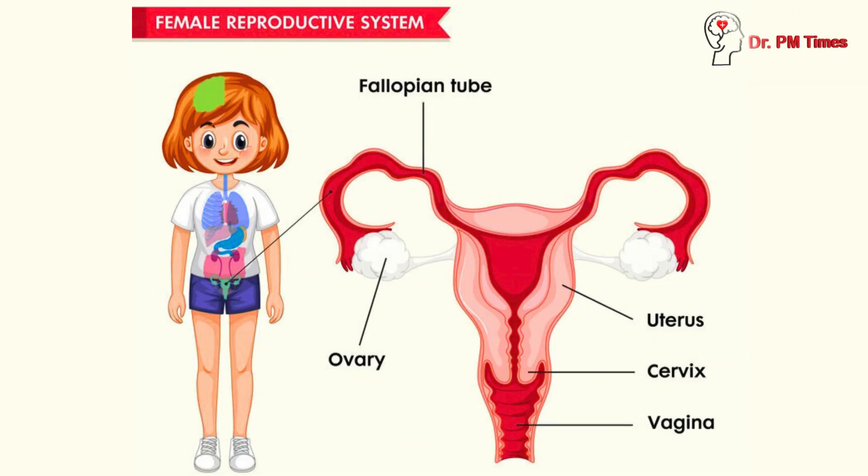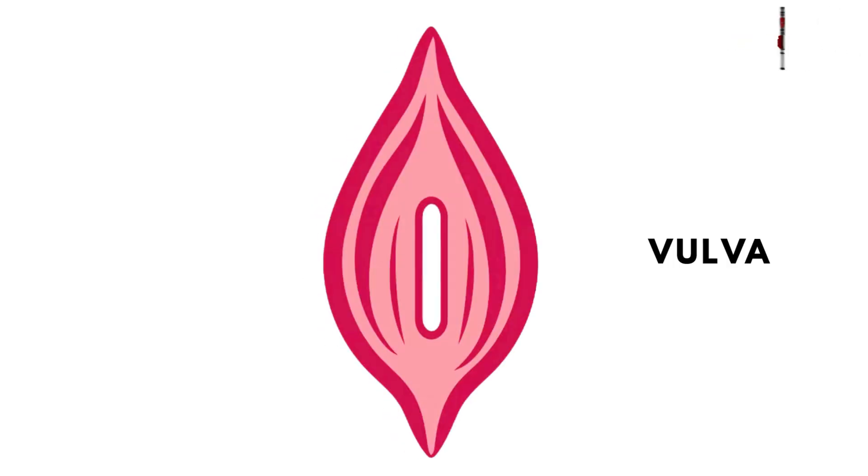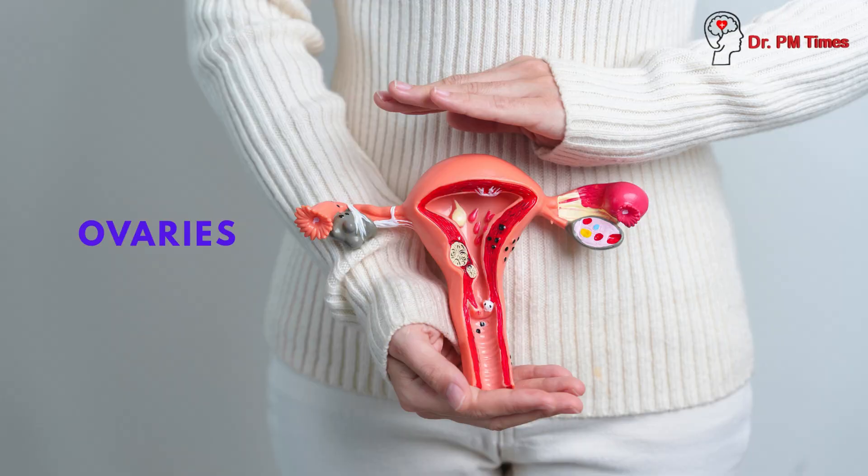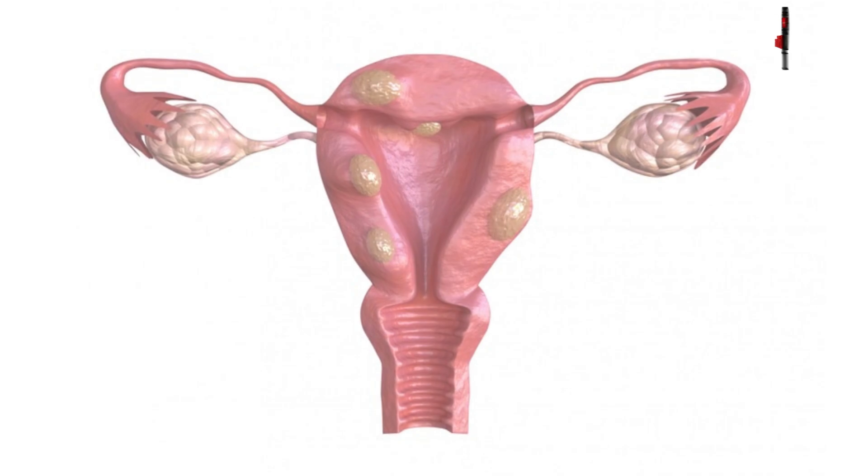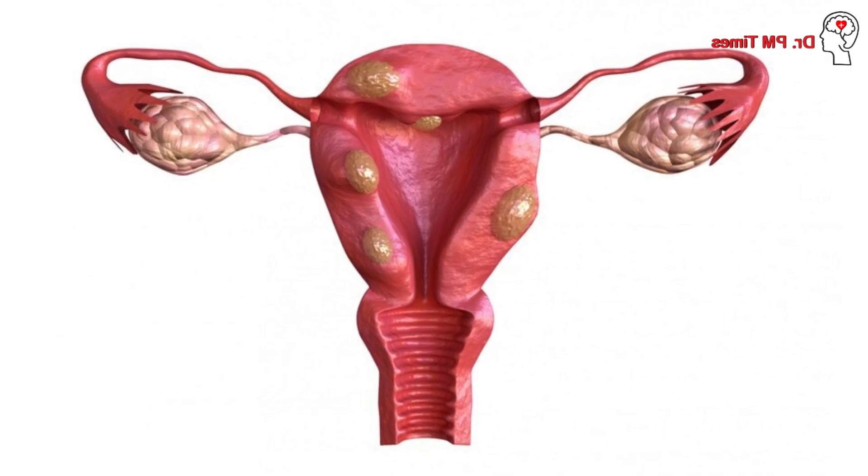The fourth stage of puberty is the development of genital organs and ovaries. The vulva becomes thickened and keratinized, the labia minora gets thickened, and development of the ovaries occurs. The cervical-uterine ratio changes from one-to-one to two-to-one. The primordial follicles in the ovaries mature into Graafian follicles. All these developmental changes in the genital organs and ovaries occur during this stage.